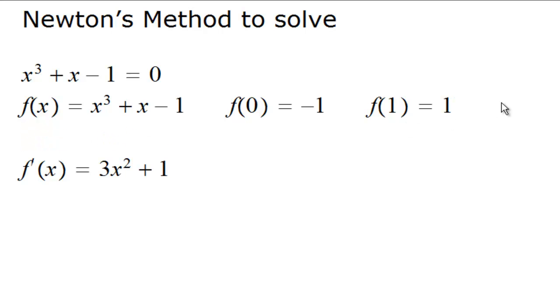What we have is that because of intermediate value theorem, this equation will have a solution between x equals 0 and x equals 1. And we can start with our guess value of 0.5 here. An easy way to determine that guess.